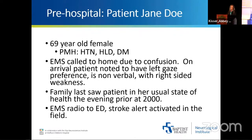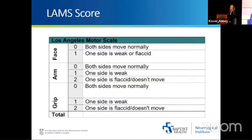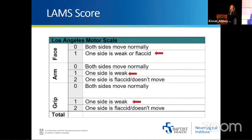EMS radios to the ER and the stroke alert is activated in the field, giving the hospital team a chance to be prepared. The LAM score — the Los Angeles Motor Scale — is a very basic pre-hospital scale that EMS uses. A LAM score of zero doesn't mean you're not having a stroke, and a score of five doesn't mean you are, but it helps guide the team. Our patient has a LAM score of three — weakness in the face, arm, and grip strength.